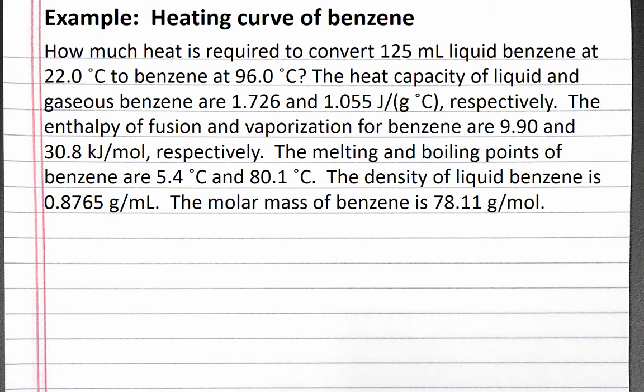The melting and boiling points of benzene are 5.4 degrees Celsius and 80.1 degrees Celsius. The density of liquid benzene is 0.8765 grams per milliliter. The molar mass of benzene is 78.11 grams per mole.